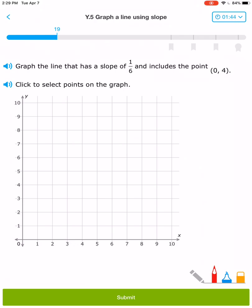A slope of 1/6 and (0, 4). So 0, 1, 2, 3, 4. And my next point is going to be 1 up, 6 over. 1, 2, 3, 4, 5, 6. And I have my point.